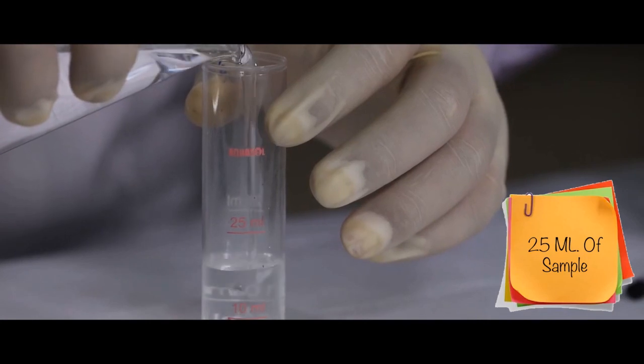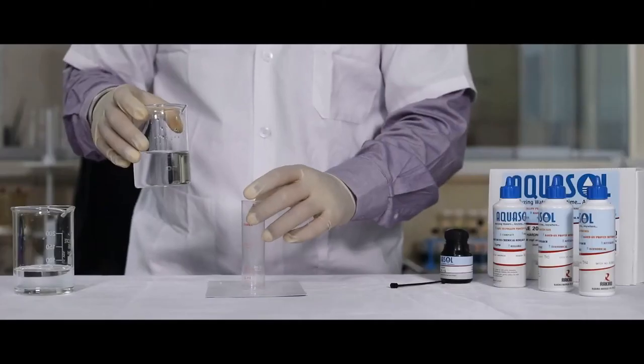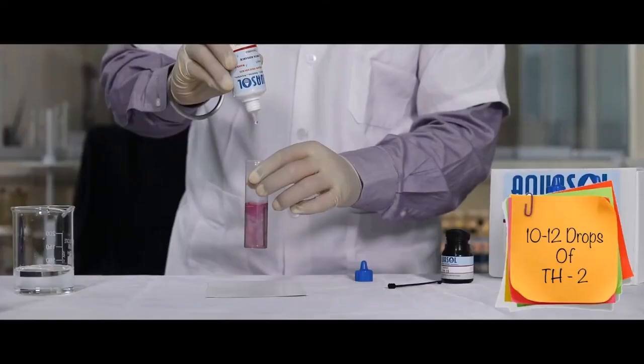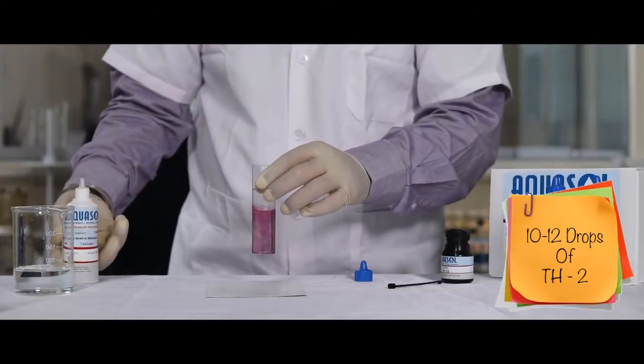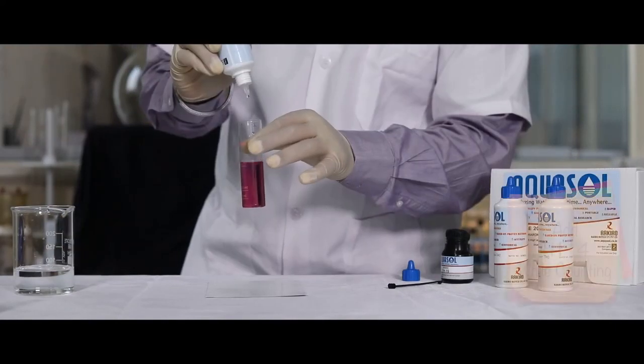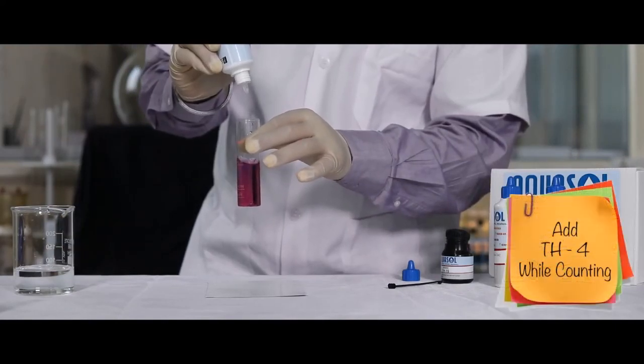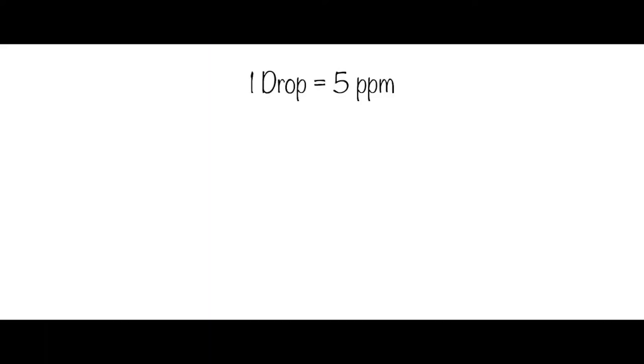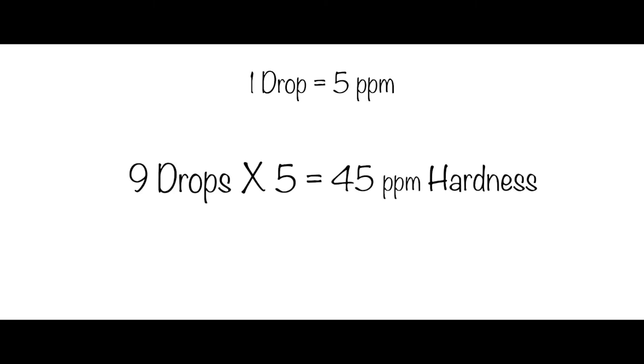Number of drops of TH4 reagent multiplied by 5 is the hardness of the sample. For example, 9 drops of TH4 reagent added, that is 9 multiplied by 5, which is 45 ppm is the hardness of the sample.